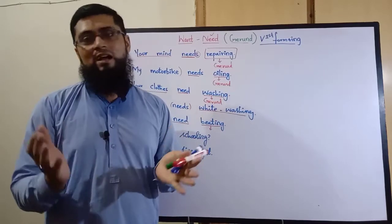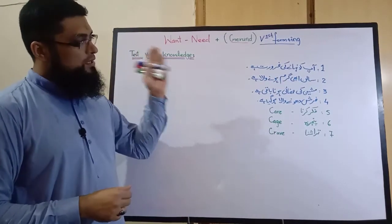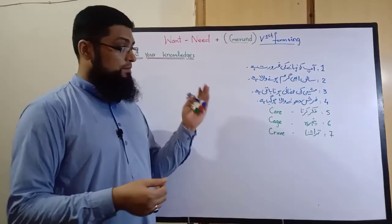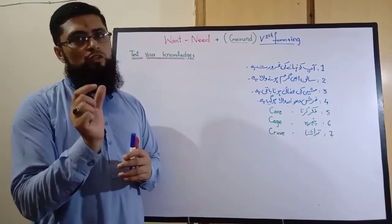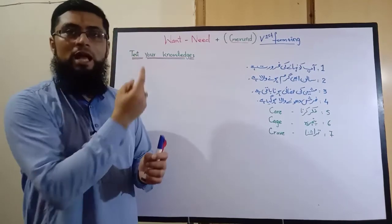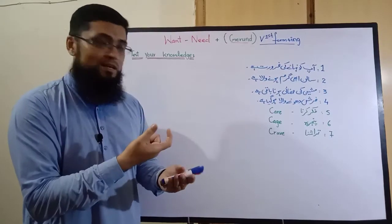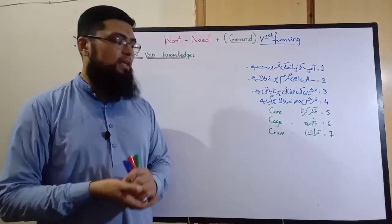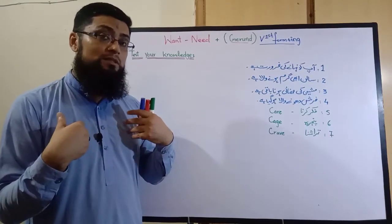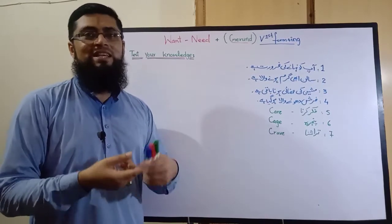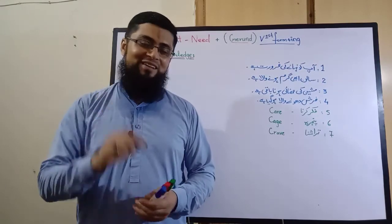یہ کچھ practice examples ہیں جنہیں آپ نے خود solve کرنا ہے: number one — آپ کو نہانے کی ضرورت ہے؛ number two — سالن ابھی گرم ہونے والا ہے؛ number three — machine کی صفائی ہونا باقی ہے؛ number four — فرش دھونے والا ہو گیا ہے؛ اور number five میں دی گئی verbs ہیں: فکر کرنا (care)، پنجرہ (cage)، اور تراشنا (crave)۔ ان سے want اور need کا جملہ بنائیں اور comment میں بھیجیں۔ خوش رہیں، اللہ حافظ۔